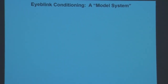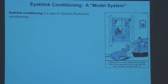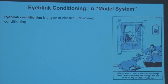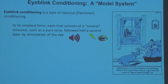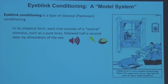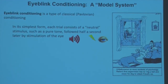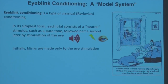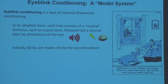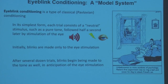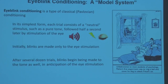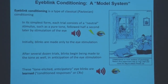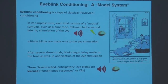Eyeblink conditioning as a model system — so what is it? It's a type of classical or Pavlovian conditioning. In its simplest form, each trial consists of a neutral stimulus such as a pure tone, followed half a second later by stimulation of the eye. Not surprisingly, the eye stimulation causes an eye blink — but that's not really what we're interested in. After several dozen trials of pairing tone and eye stimulation, blinks begin to be made to the tone as well, in anticipation of the eye stimulation. These tone-elicited anticipatory eye blinks are the learned response — or in the lingo, the conditioned response or CR.